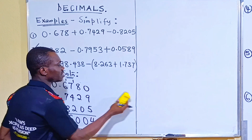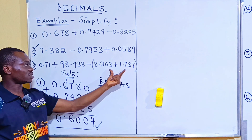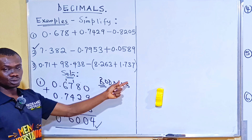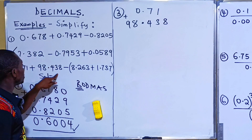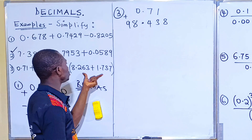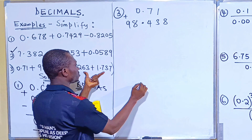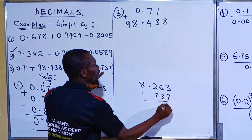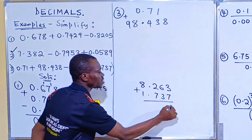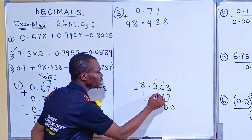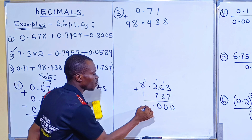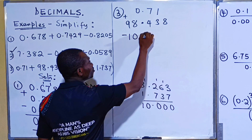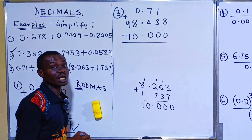For number 3, remember BODMAS — you take brackets first, so you have to add inside the brackets before subtracting. These two come together. Working through the addition: 3 + 1.737 — each column gives 10, carry 1, repeatedly, giving you a result of 10 with zeros after the decimal. You can put 0s to fill. This place that is empty, fill with 0. So 8 minus 0 is 8, 4 minus 0 is 4, and so on, placing your decimal point.